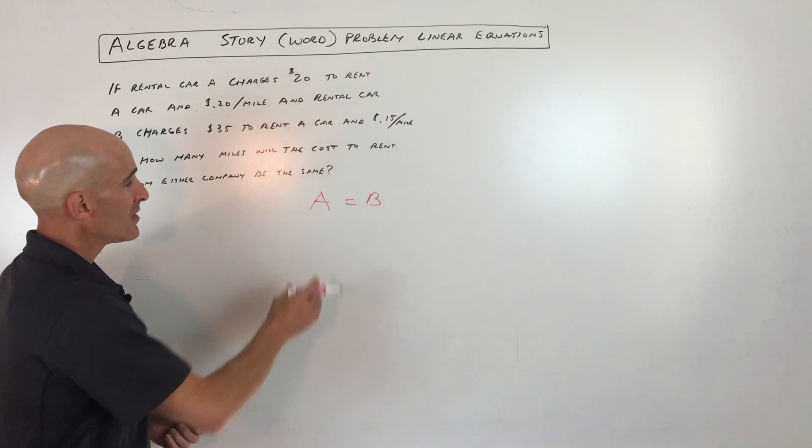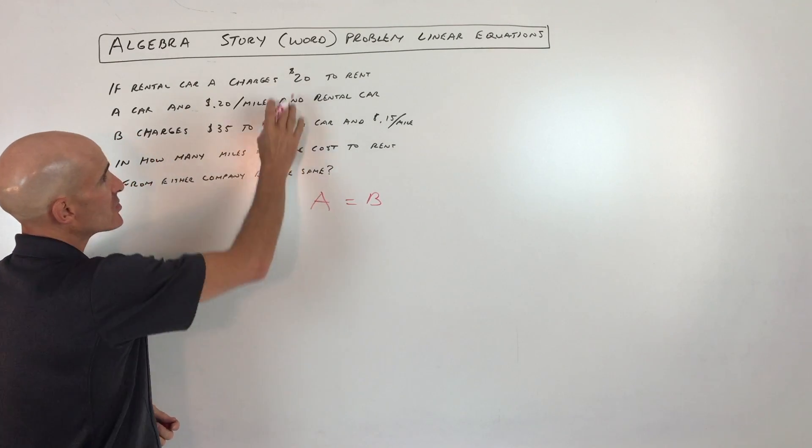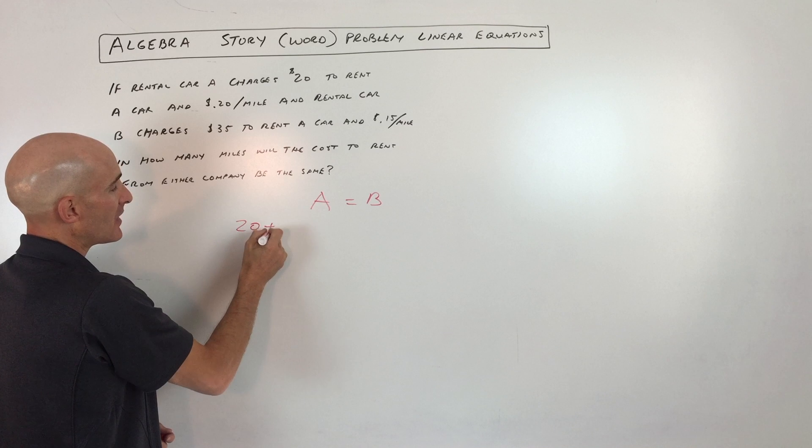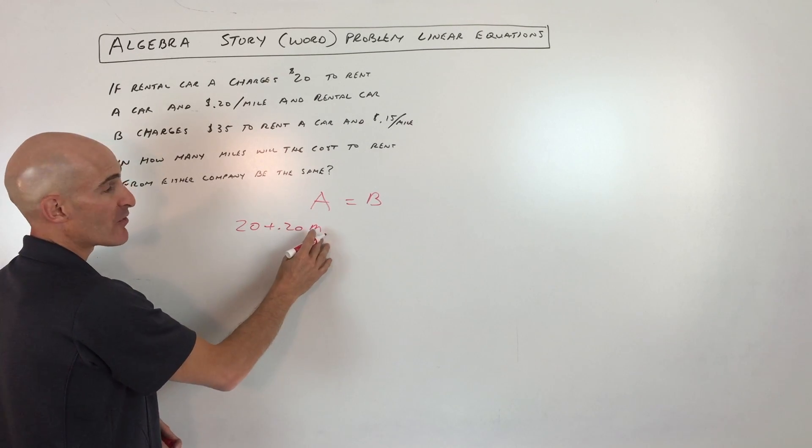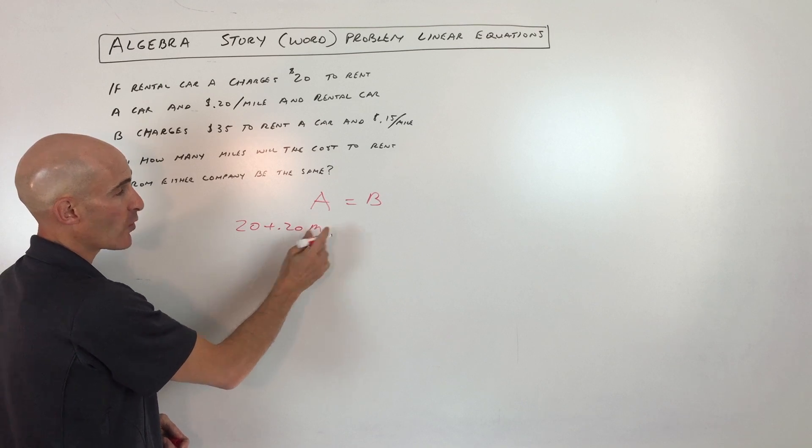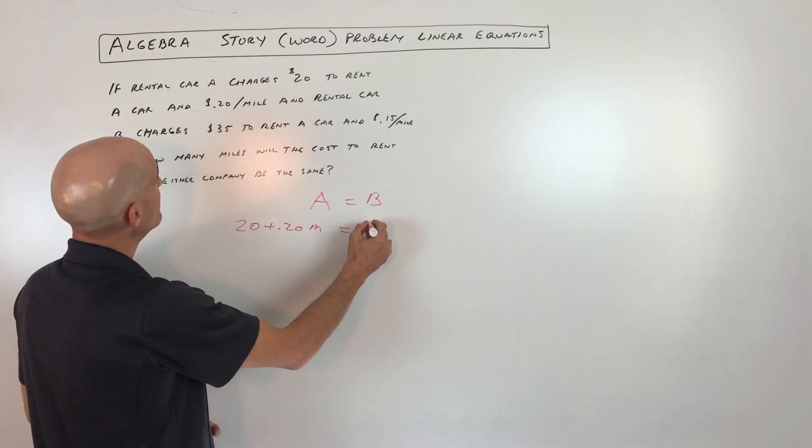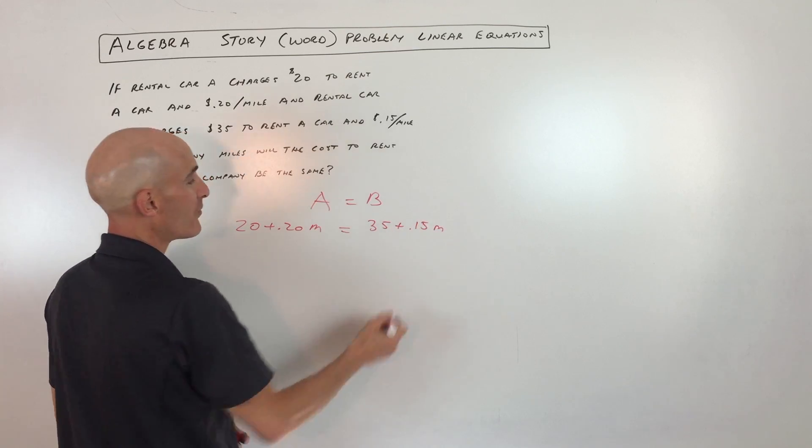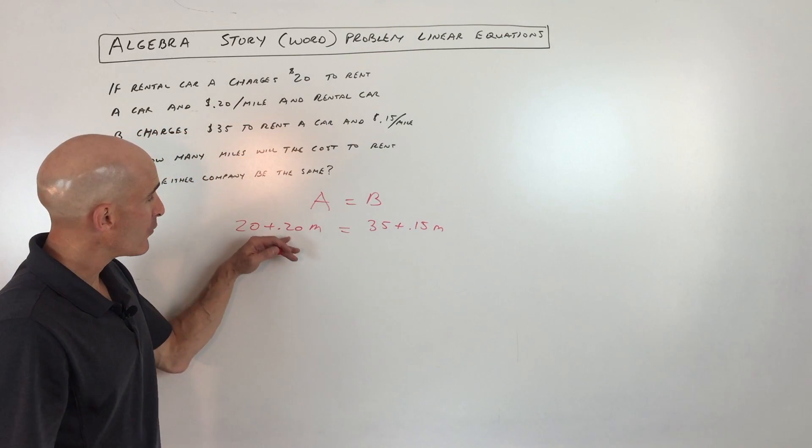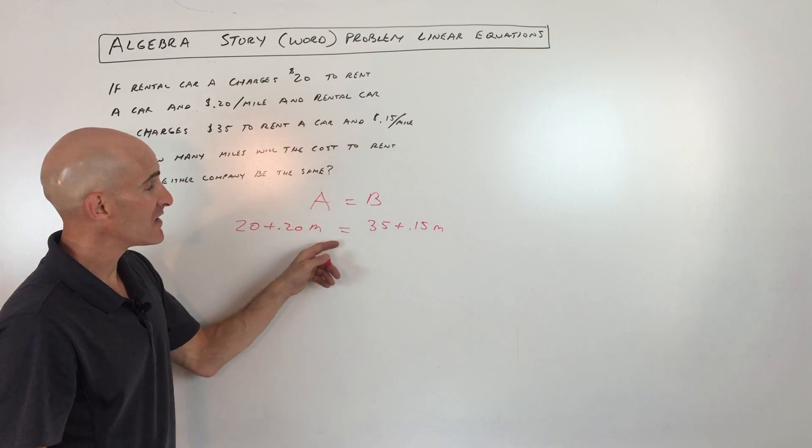So diagramming it out. Company A, they charge $20. That's a flat rate, right? Plus $0.20 times m, the number of miles. Or you could use the variable x, either way. Company B, they charge a flat fee of $35 plus $0.15 per mile. So are you with me so far? We want to know when these costs are going to be equal to one another.